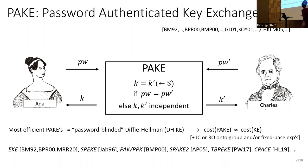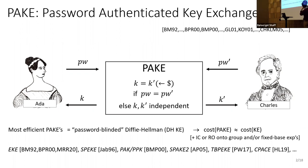PAKE is a functionality where two parties input passwords, and the functionality checks if the passwords are the same. If they are, it gives them a fresh random key; if not, it gives them independent keys. It is used for authentication and key establishment at the same time.